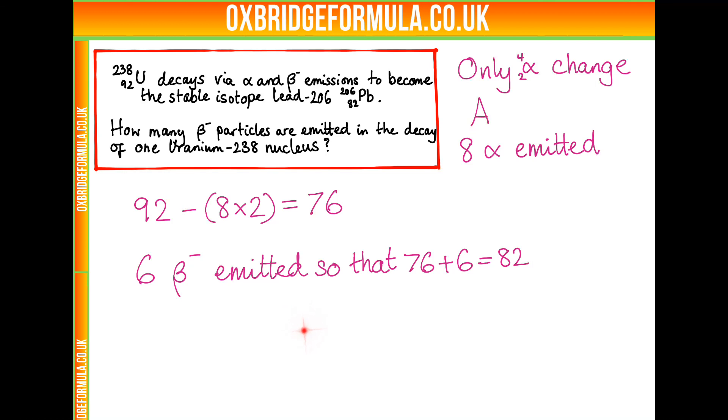This is useful in these types of questions where you need to work out either the alpha or beta particles that have been emitted. Whenever you notice the changes in the atomic number, think about the alpha particles, and then for any changes in the proton number, think about the beta-minus particles after deducing what happens with the alpha.